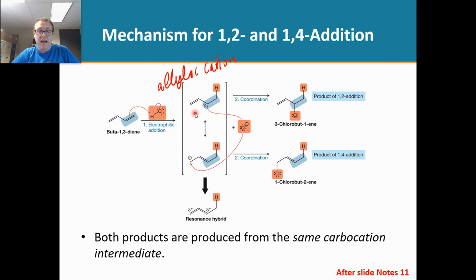Once that cation is formed, you have two resonant structures here. When you have this resonant structure right here, the chloride is going to come in and attack that carbon and we get this product right here. However, with the same molecule, you can have a second resonant structure here, which then if the chloride comes in and attacks at that position, we get this product. We call these a 1-2-1-4 addition product based off of the relationship of where the hydrogen added and where the halogen added.